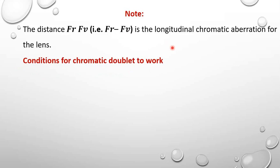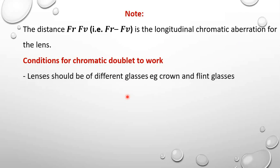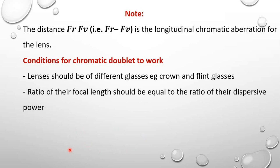Let's look at the conditions for a chromatic doublet to work. First, the lenses should be of different glasses, for example crown glass and flint glass. Also, the ratio of their focal lengths should be equal to the ratio of their dispersing power. Furthermore, the separation between them should be equal to the mean of their focal lengths.